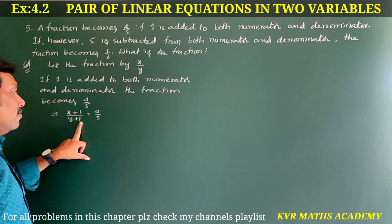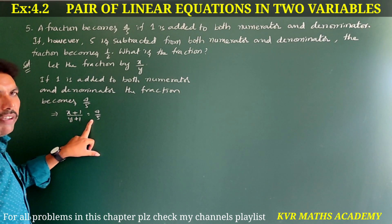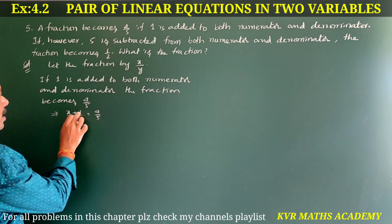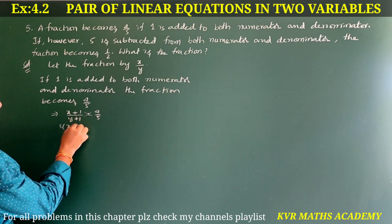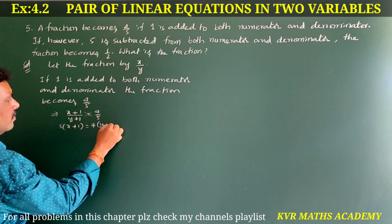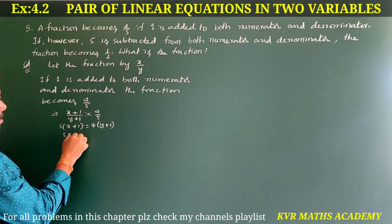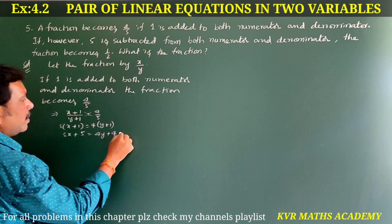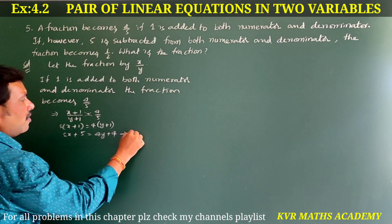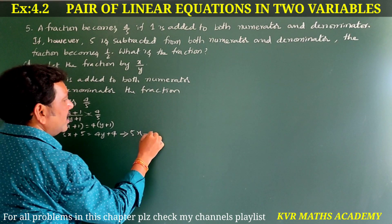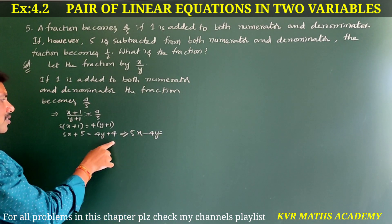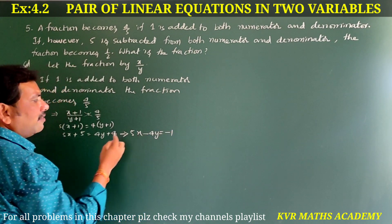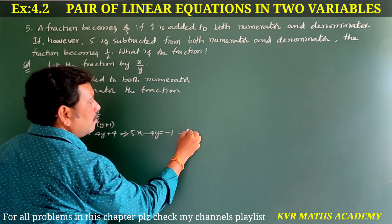Cross multiplying: 5 into x plus 1 is equal to 4 into y plus 1. So 5x plus 5 is equal to 4y plus 4. Rearranging: 5x minus 4y is equal to minus 1. This is equation number 1.